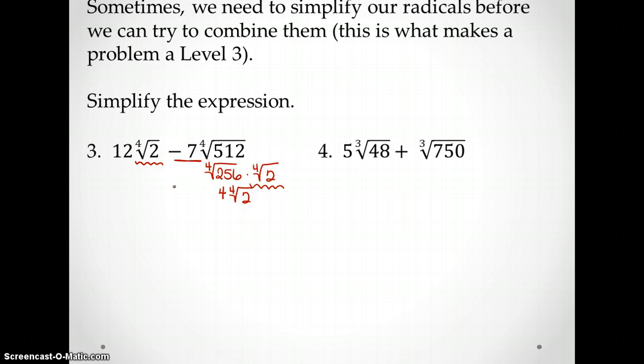So I have 4 fourth roots of 2. And then remember, I've got to multiply by this 7 here. So what we've ended up with now is 12 fourth roots of 2 minus 7 times 4, which is 28 fourth roots of 2. And ta-da! Now you can see what we've got. We have like radicals. So now I can do 12 minus 28, which is negative 16, fourth roots of 2. And this is the answer.